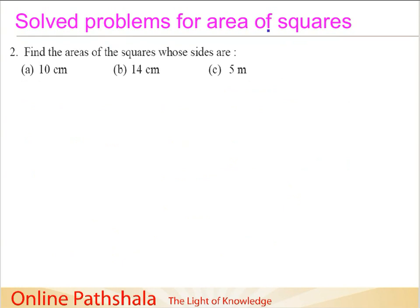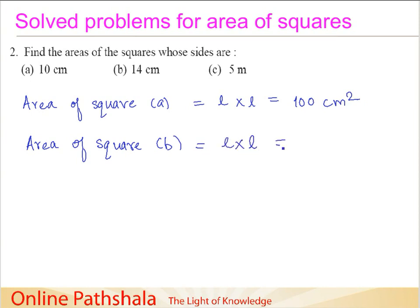Now let's try to find out the area of squares. We are supposed to find out areas of squares whose sides are given below. We know that area of square A, whose side is 10, is length multiplied by length, which is 100 centimeter square. Then area of square B is length multiplied by length, which is 14 multiplied by 14. When I multiply 14 by 14, 14 squared gives me 196 centimeter square.